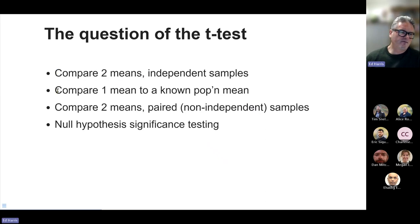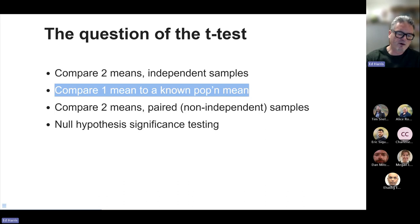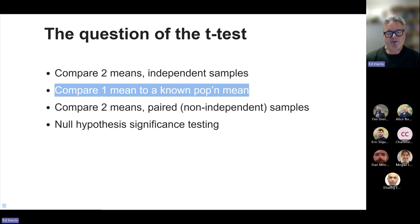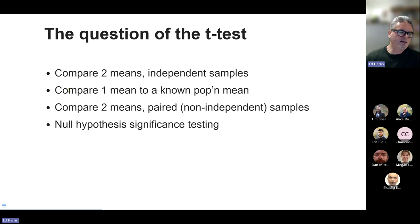There's another version of the t-test — probably the least used, but important to mention. This is where you have a known population mean — maybe it's a gold standard, a past experiment, or a control from a previous experiment — and you merely want to compare another single sample to that known mean. All you need is the mean to perform this test, and it's called a one-sample mean compared to a known mean.